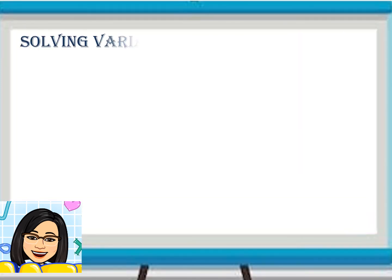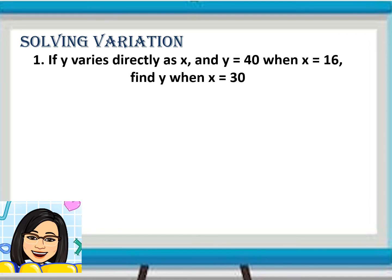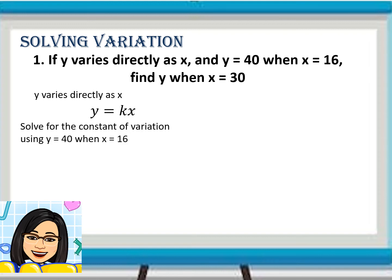Now let us solve the following problems. In the first example: if Y varies directly as X and Y equals 40 when X equals 16, find Y when X equals 30. We start by transforming 'Y varies directly as X' into symbols: Y is equal to KX. Then, we solve for the constant of variation K using the given values Y equals 40 and X equals 16.